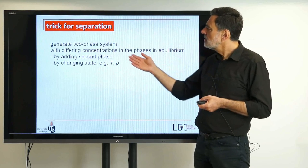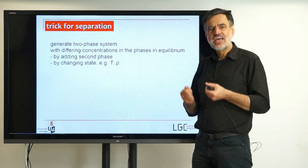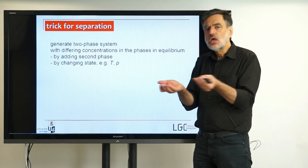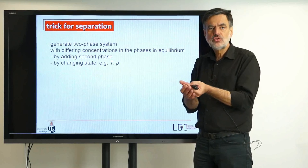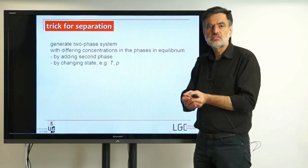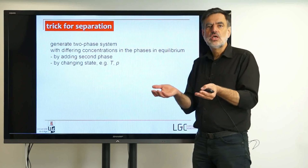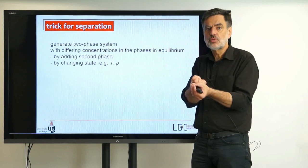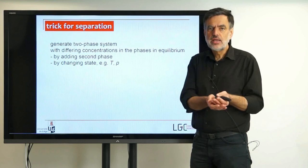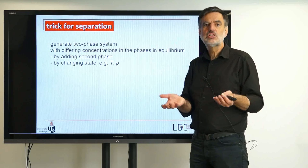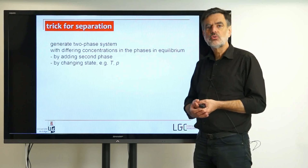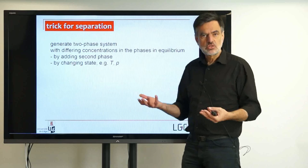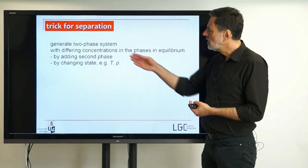Now we have two options to generate such a two-phase system. One is by simply adding a second phase. You have one phase and you add a second one. Possibly you have done this this morning — you brewed your coffee or your tea. You have a solid phase, you add a liquid phase, and you separate the caffeine and the aroma components, extracting them from the tea leaves or the coffee powder. You leave behind solid waste material depleted in aroma components and caffeine, and on the other hand you have your coffee or tea enriched in these components. This means separation.